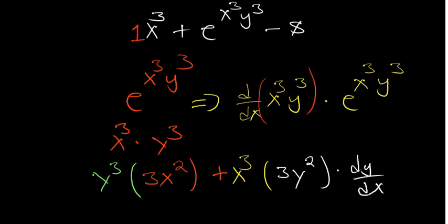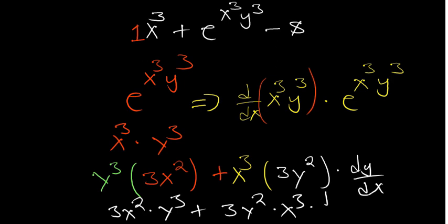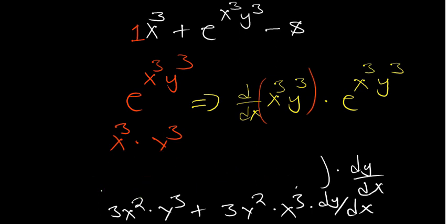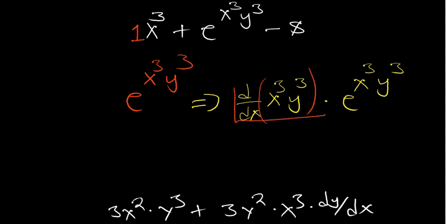Simplifying, we have 3x²y³ plus 3y²x³ dy/dx. So we have determined the derivative of the power x³y³. We can now substitute back. Going back to the original function to find dy/dx, the derivative of x³ is 3x².